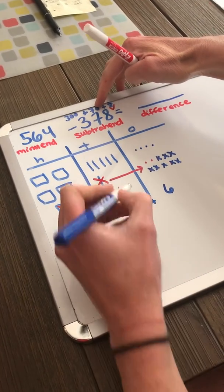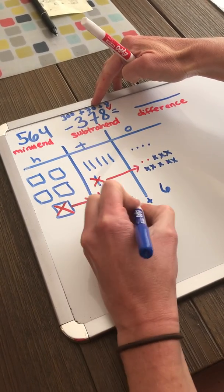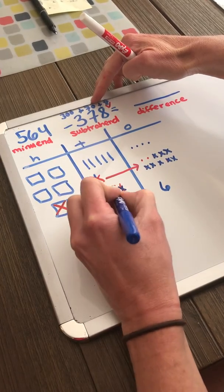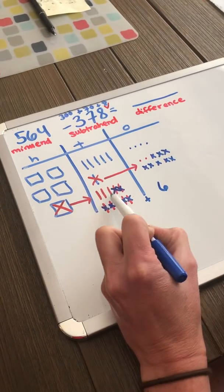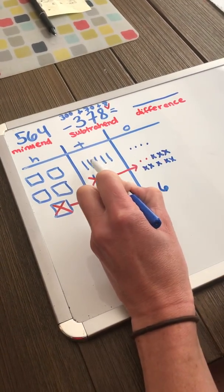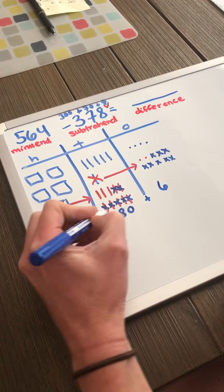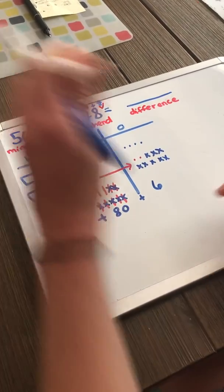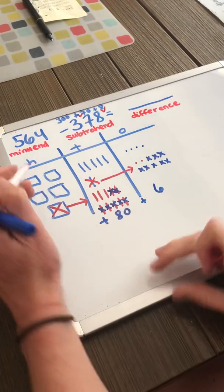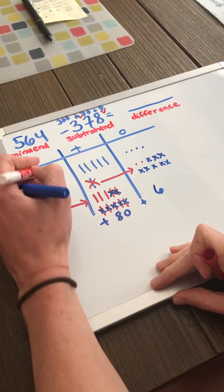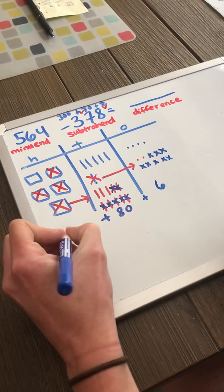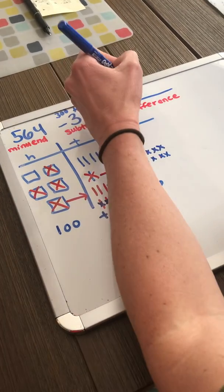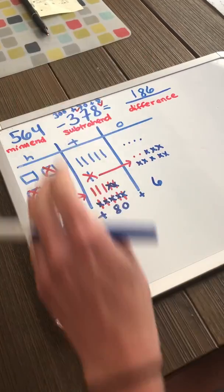Now I'm going to take away 70 — counting by tens: 10, 20, 30, 40, 50, 60, 70. I am left with 10, 20, 30, 40, 50, 60, 70, 80. Now I need to take away 300: 100, 200, 300. I am left with 100. The difference to this problem is 186.